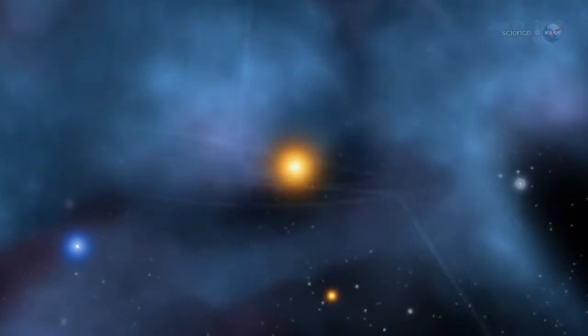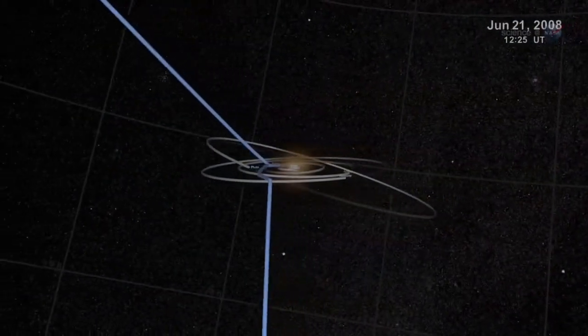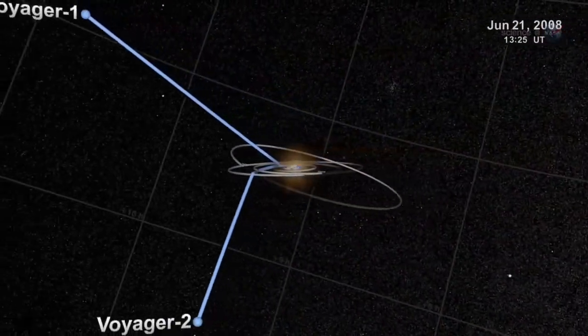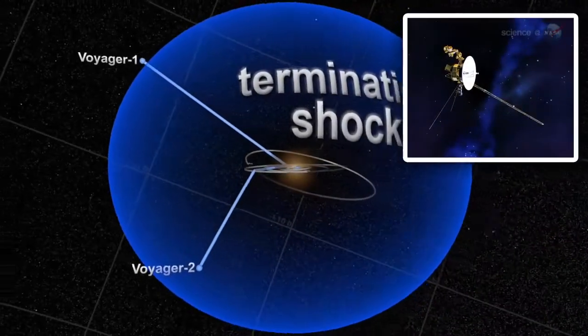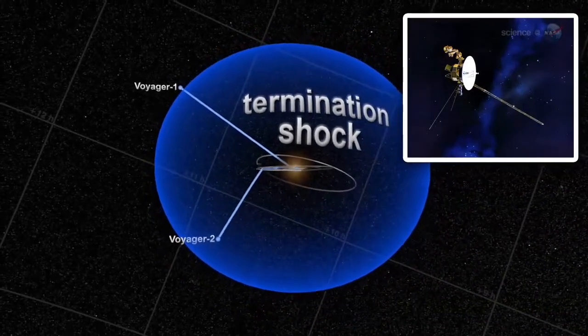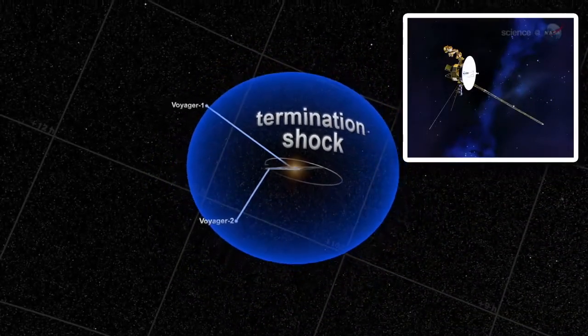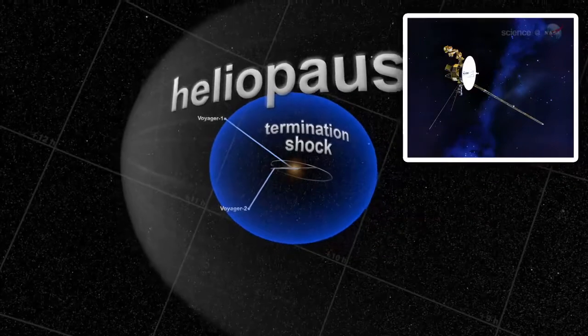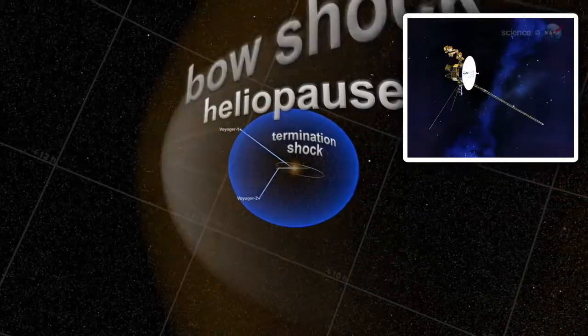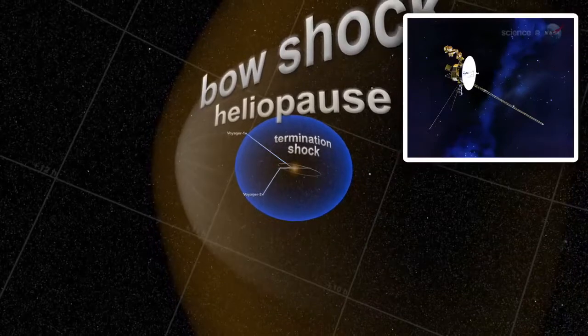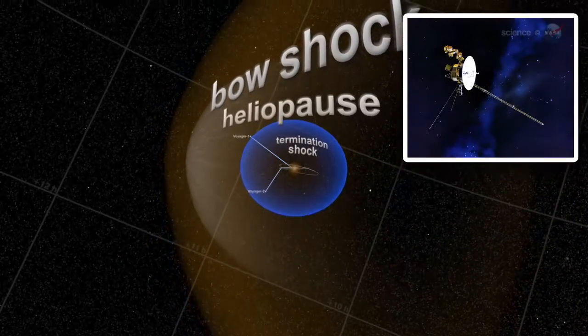While IBEX samples alien atoms from Earth's orbit, NASA's Voyager spacecraft have been traveling to the edge of the heliosphere for nearly 40 years, and they could soon find themselves on the outside looking in. Researchers expect Voyager 1 to exit the solar system within the next few years. The new data from IBEX suggests the Voyagers are heading for a new frontier indeed.